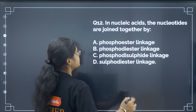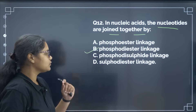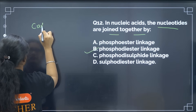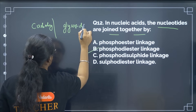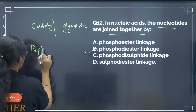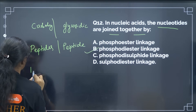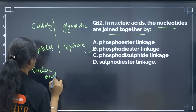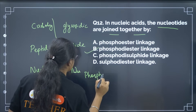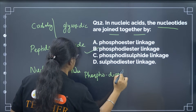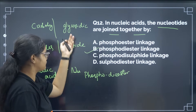In nucleic acids, nucleotides are joined together by phosphodiester linkages. To revise: carbohydrates are joined by glycosidic linkage, amino acids in peptides are linked by peptide bonds, and nucleic acids are connected by phosphodiester linkage. These are the three types of bonding in biomolecules.